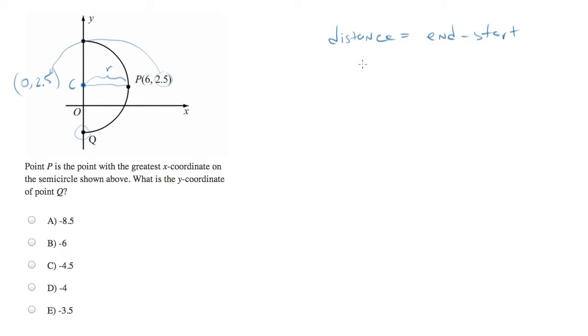So if we want to calculate the radius, this distance will equal the radius. And let's calculate distance starting from C and moving to P. The end, we're going to do x-coordinates here, the end is 6, and the start is 0. So the radius, therefore, equals 6.